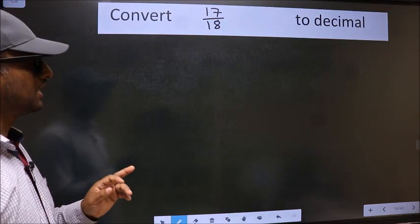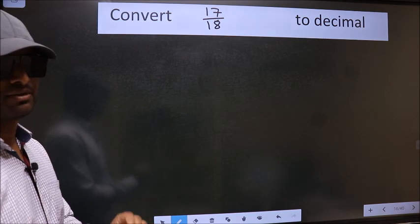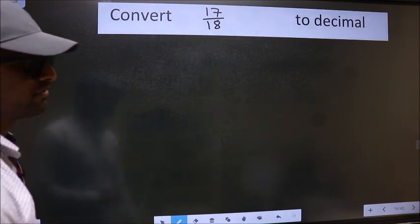Convert 17 by 18 to decimal. To convert to decimal we have to divide, and to divide we should frame it in this way.